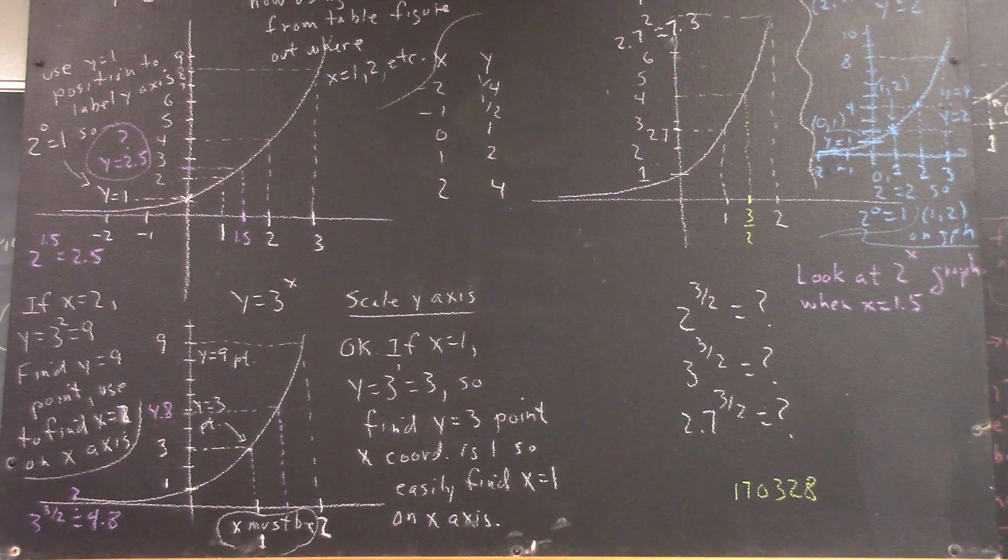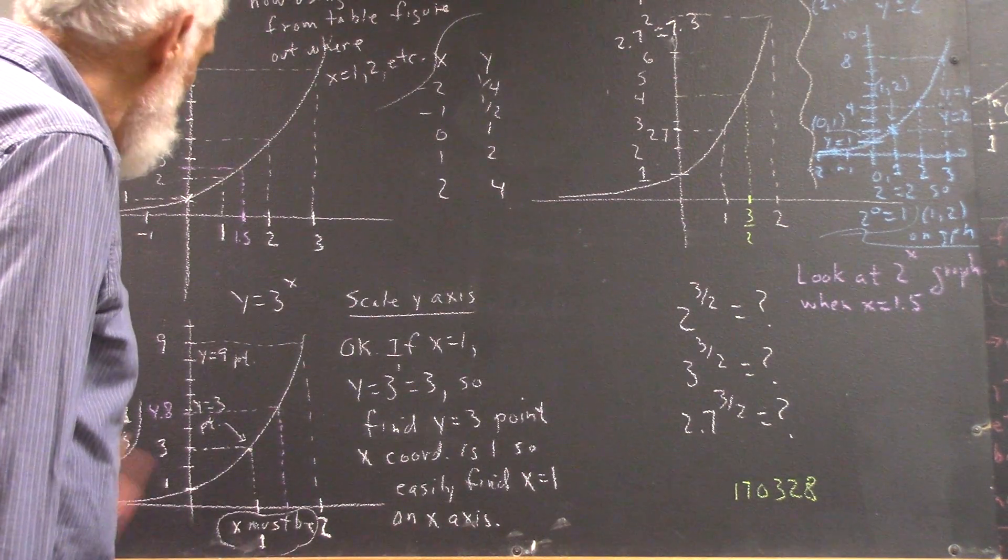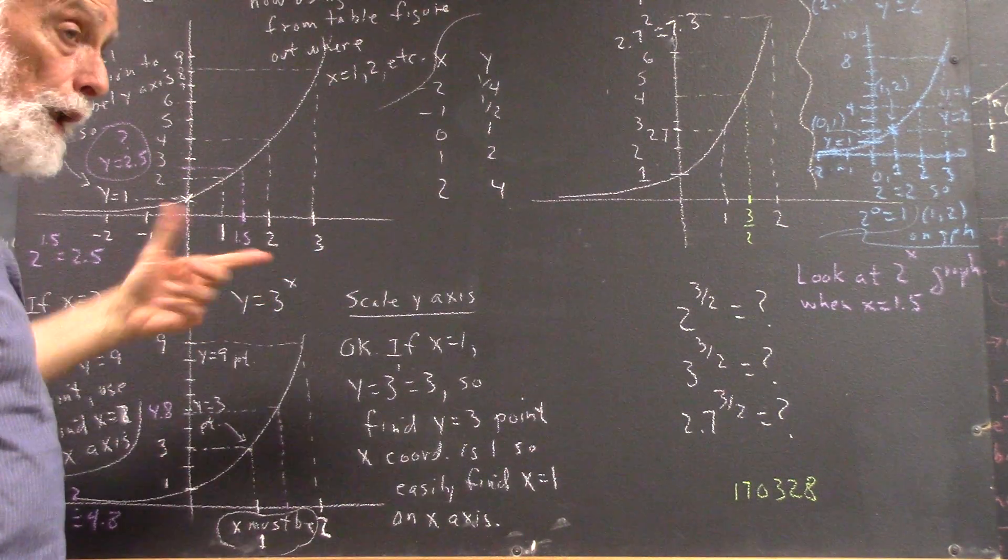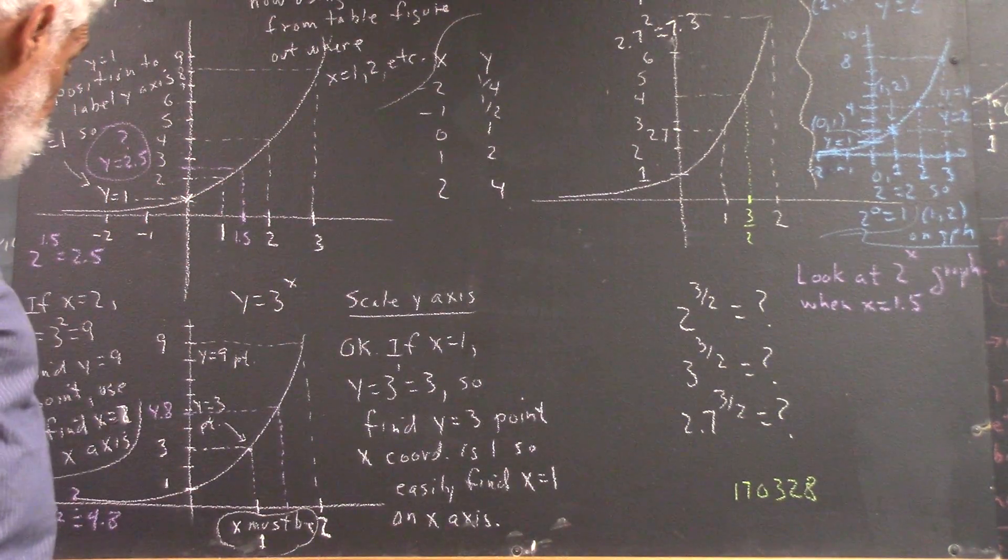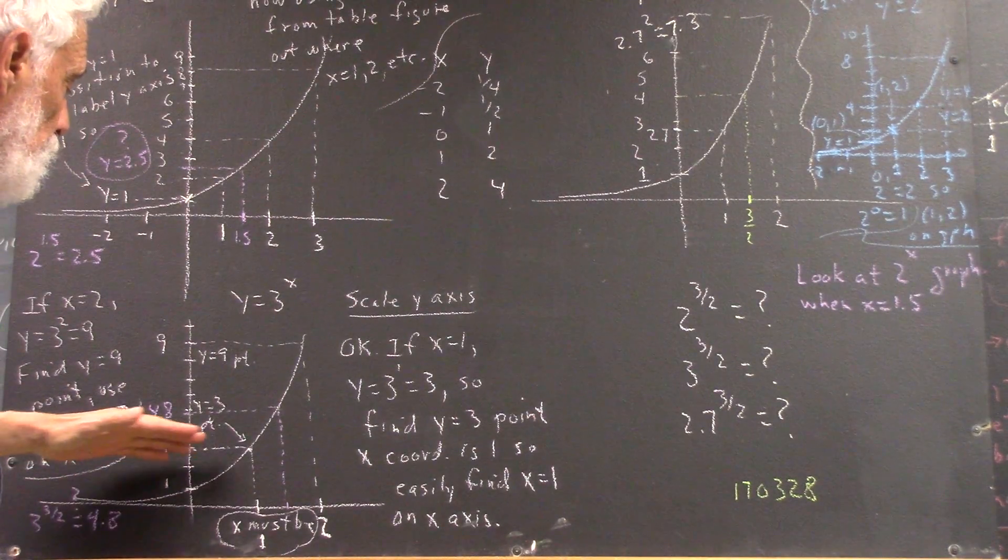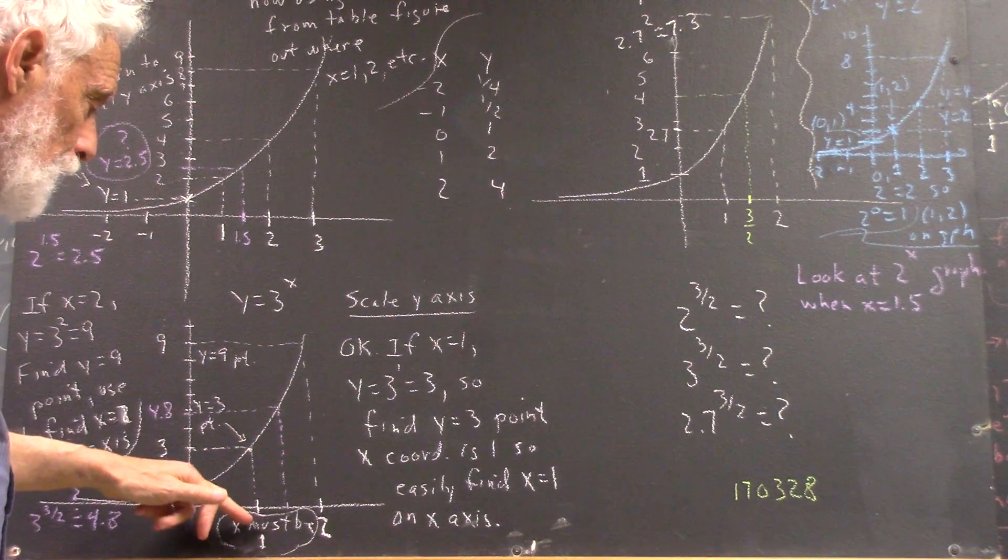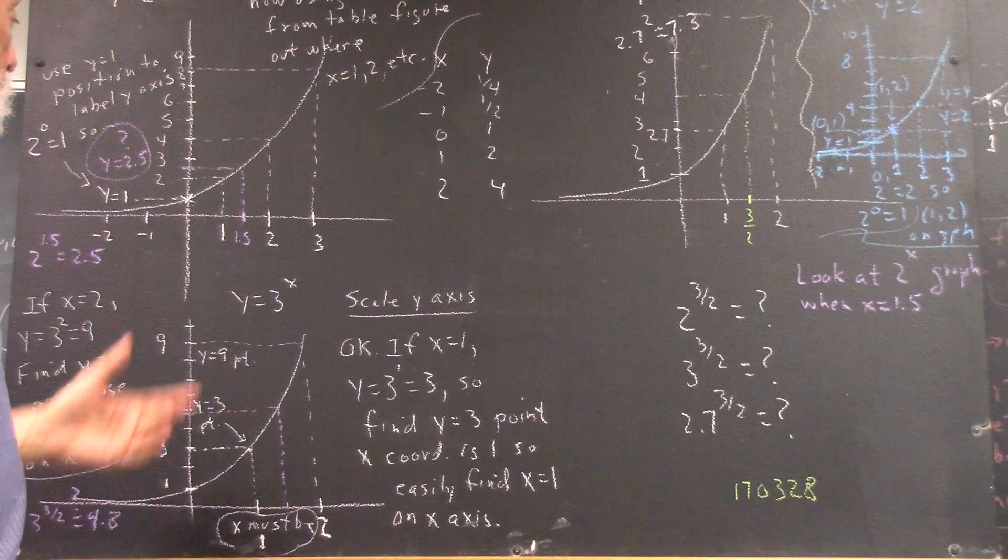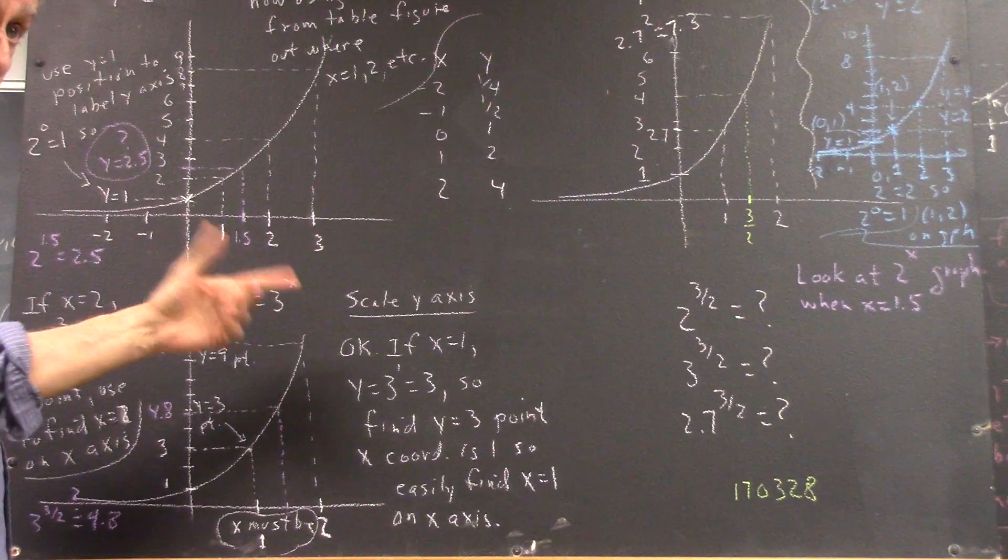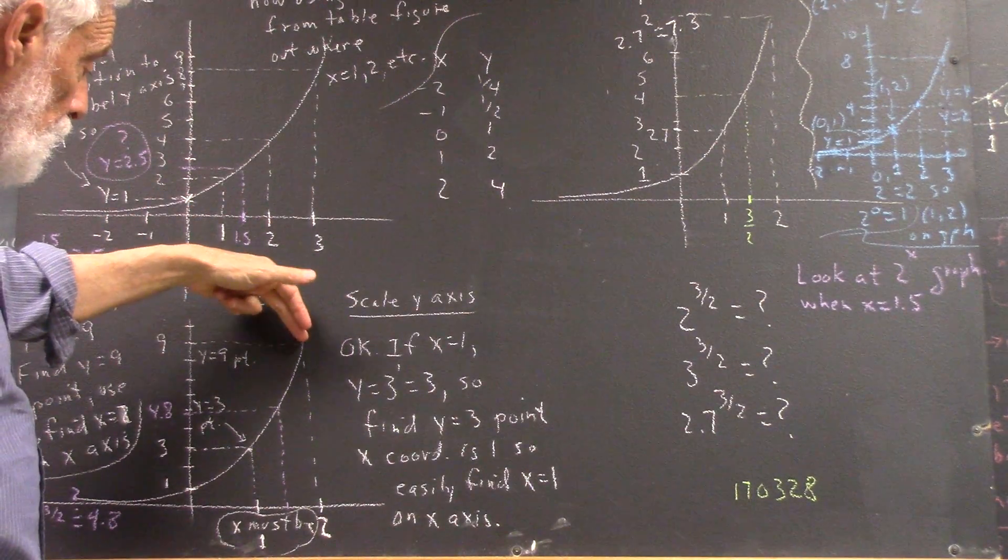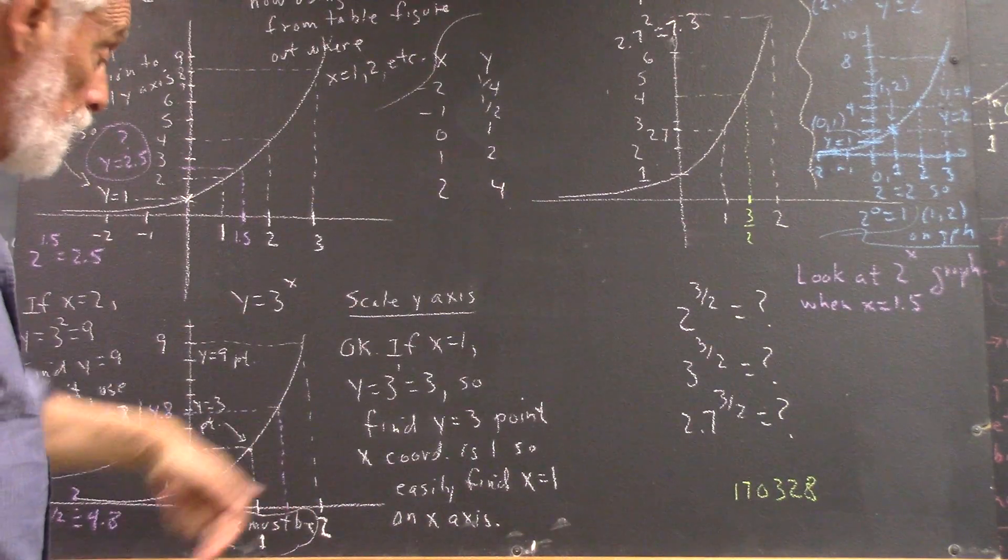To get the x scale though, we have to use the values of 3 to the x. So if x equals 1, 3 to the x is 3 to the 1, or 3. So we come up to 3 and we find the y equals 3 point of the graph, and that's where x has to be 1. And then when x is 2, y is going to be 3 to the 2nd, which is going to be 9, and we find the y equals 9 point of the graph, and directly below that is where x equals 2.